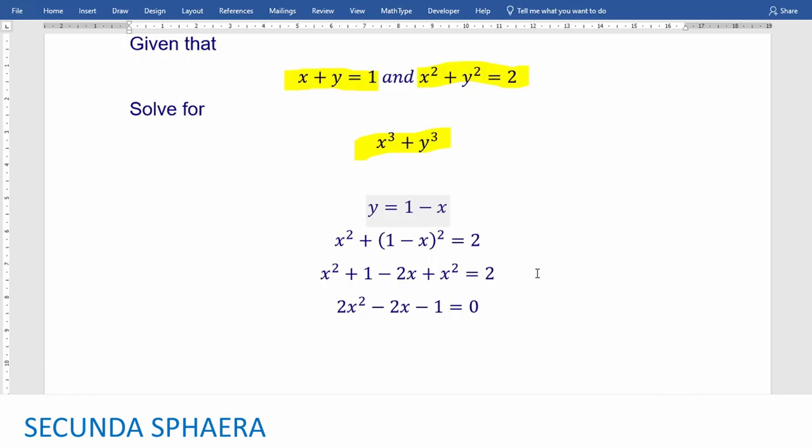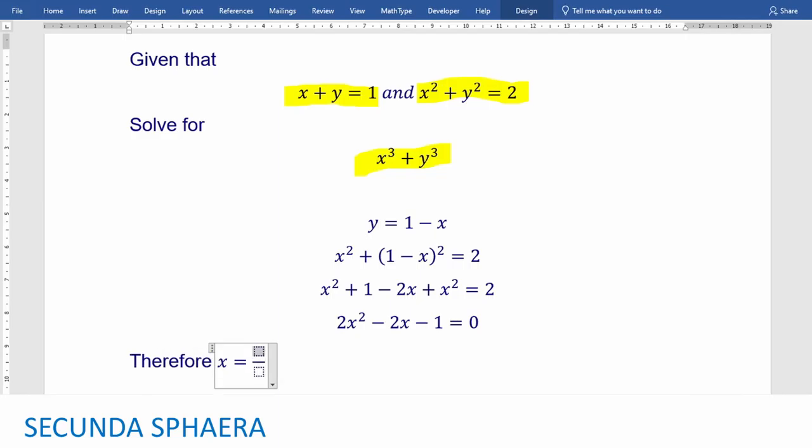So we are going to get that 2x squared minus 2x minus 1 equals 0. 2 plus minus the square root of 4 plus 8. In this case, we have 4 times 2 times minus 1 over 4. And we can reduce this.